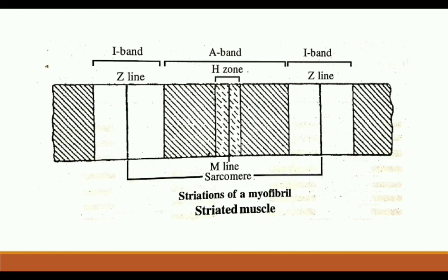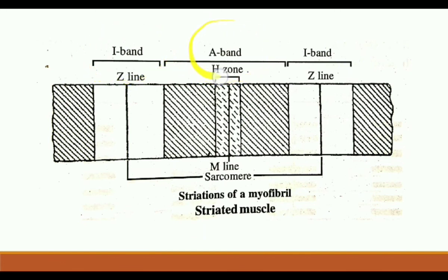To summarize the band structure: muscle fibers alternate between dark A-bands (anisotropic bands) and light I-bands (isotropic bands). Each I-band is bisected by a Z-line. Within the A-band, there is a lighter H-zone, and at the center of the H-zone is the M-line.